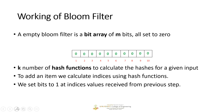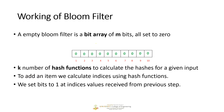If I have to enter one particular value into a bloom filter and I have three hash functions, I will take that value and apply it to each of the hash functions. When I apply the value to the hash functions, I will get three different outputs. Let's say the outputs are 1, 4, and 7.